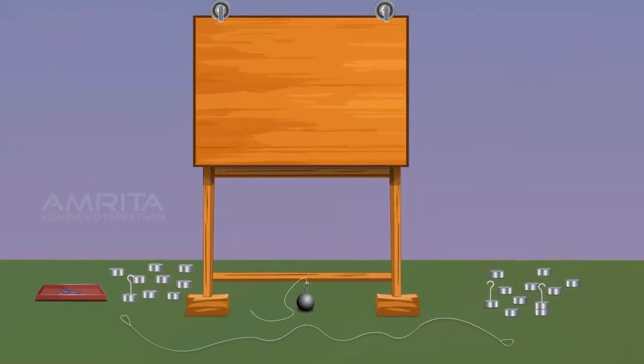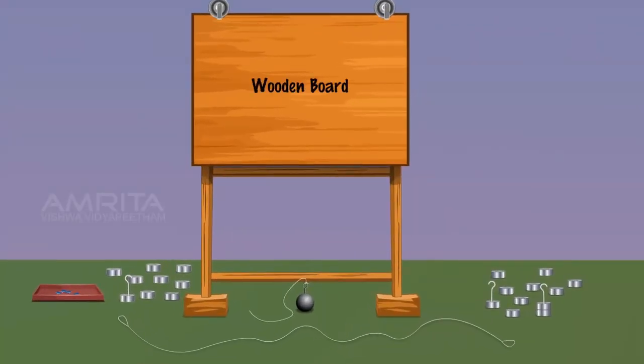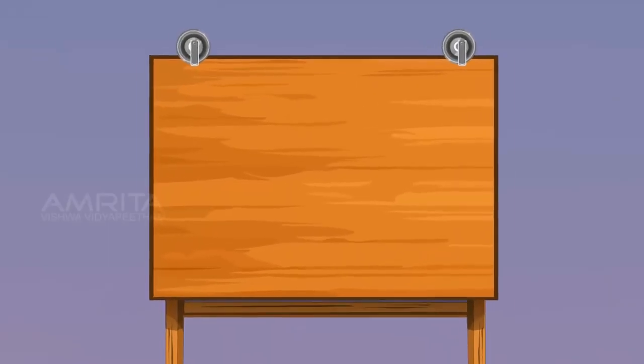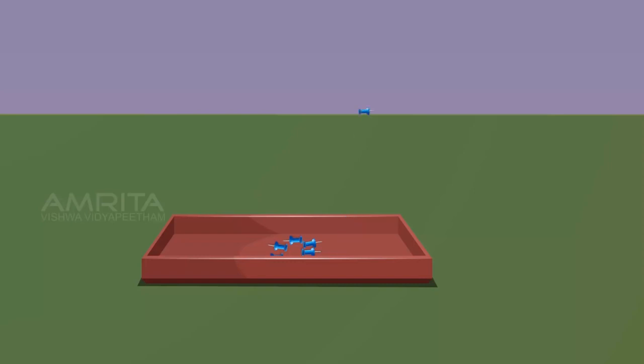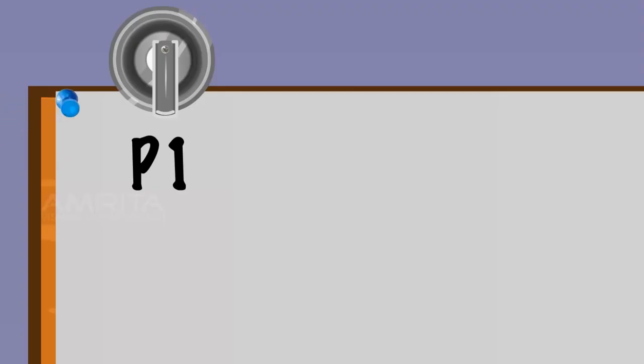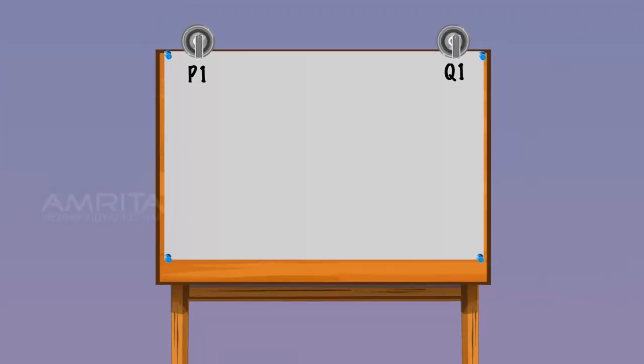Let's understand the main parts of Gravesend's apparatus. Place a paper on the wooden board. Take pins from the box. Firmly fix the paper on the board using the pins.